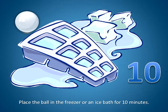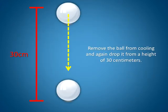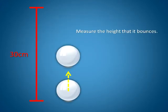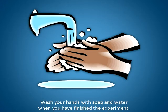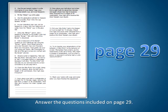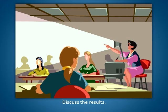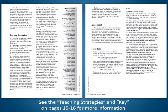Place the ball in the freezer or ice bath for 10 minutes. Remove the ball from cooling and again drop it from a height of 30 centimeters; measure the height that it bounces. Wash your hands with soap and water when you have finished the experiment. Answer the questions included on page 29. Discuss the results. See the teaching strategies and key on pages 15 and 16 for more information.